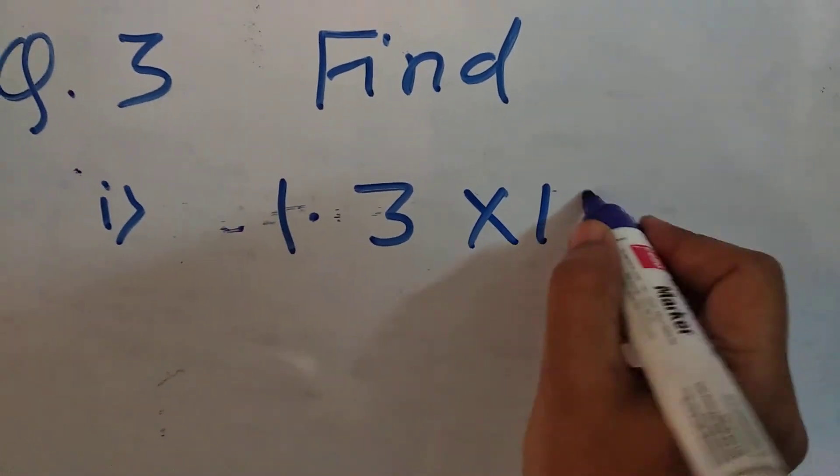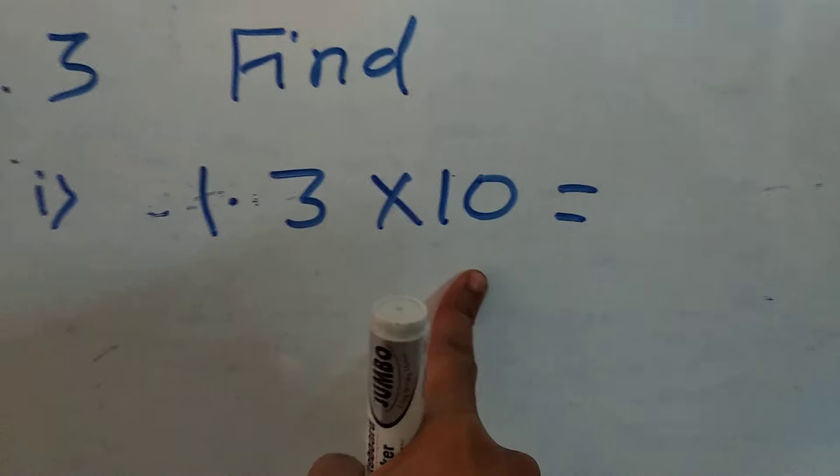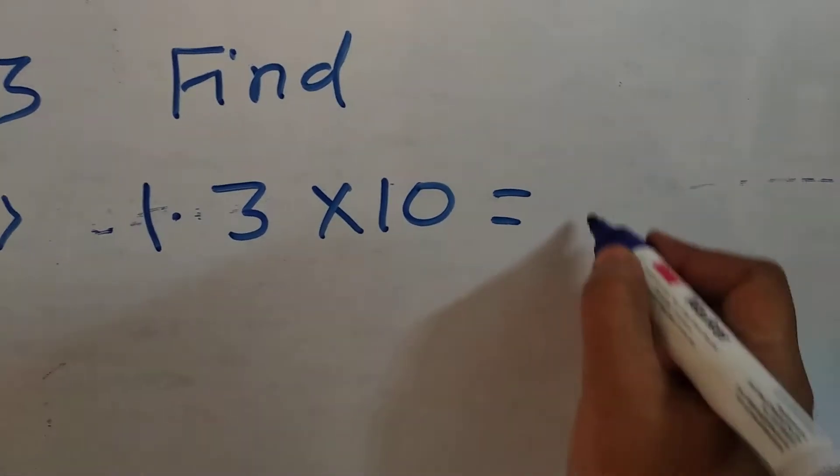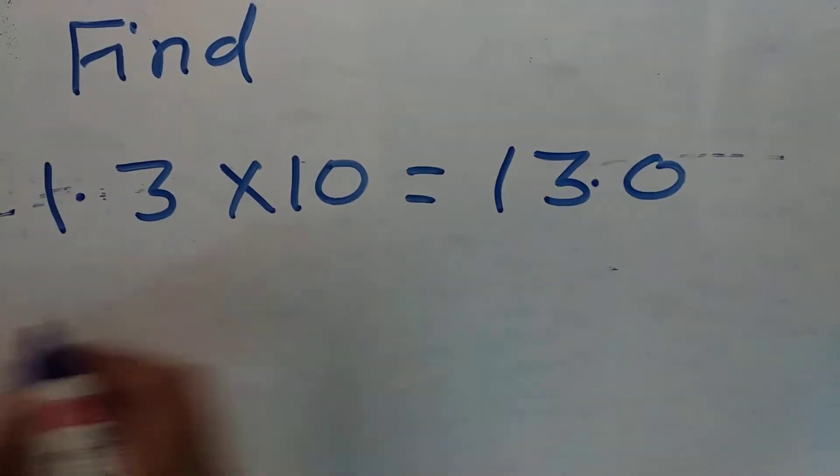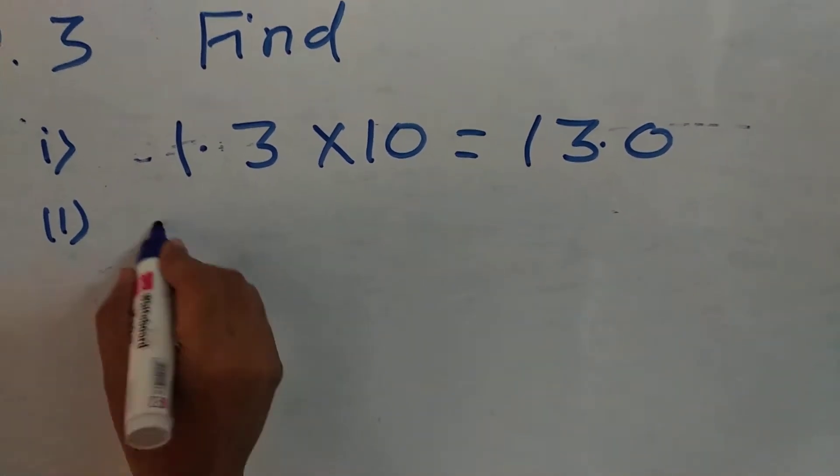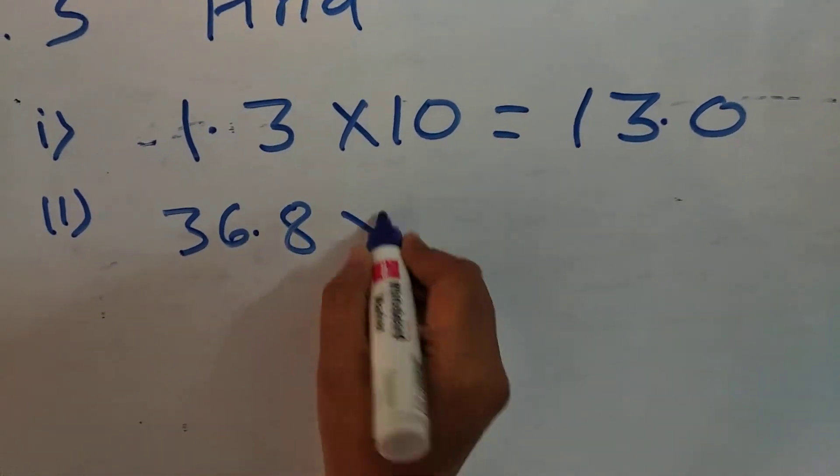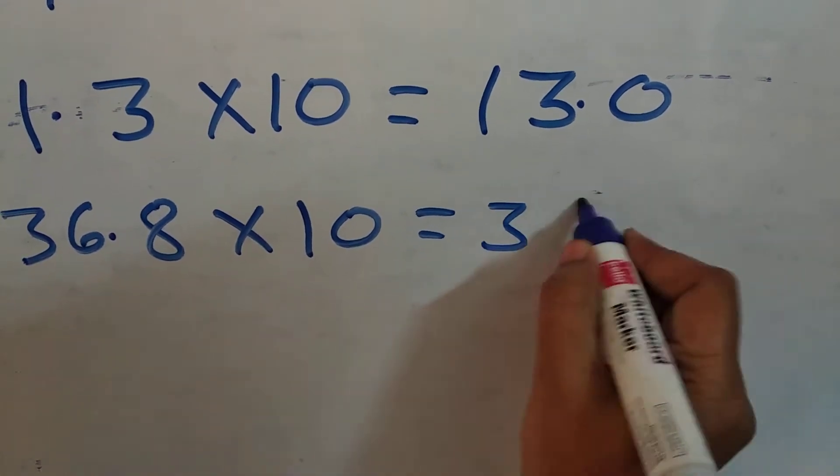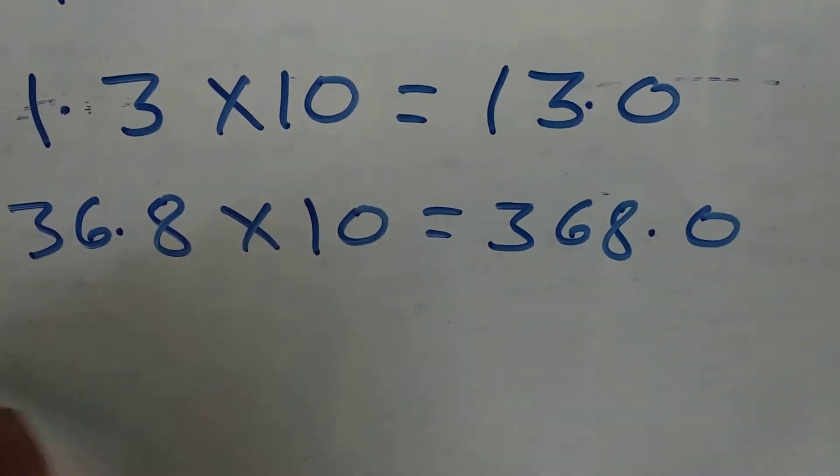Here, 1.3 multiplied by 10. You are multiplying by 10 means you have to shift one digit right side. This answer incoming 13.0. Second one, 36.8 multiplied by 10. Here also, shift this digit, this side decimal here, 368.0.